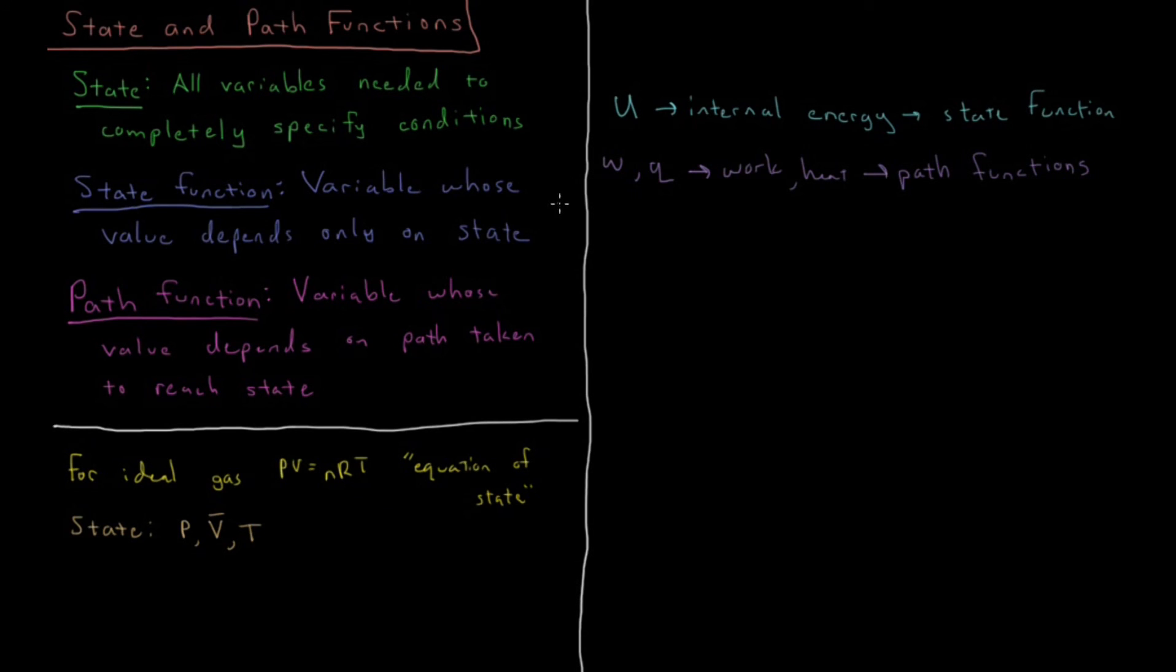For a change in energy during a given process, if we have the differential of energy, or du in calculus notation, and we want to find the difference in energy between an initial and final state, we can integrate the change in energy from the initial to the final state at every point along the path. That is equivalent to the final energy minus the initial energy, or the resultant delta U.